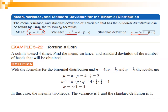Let's take an example — tossing a coin. If a coin is tossed four times, find the mean, variance, and standard deviation. The probability of success — getting heads — is P = 1/2, and N = 4. The mean μ = 4 × 1/2 = 2. The variance σ² = N × P × Q = 4 × 1/2 × 1/2 = 1. The standard deviation σ = √1 = 1.